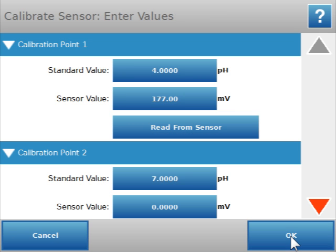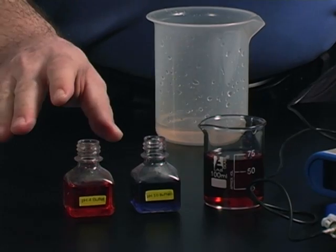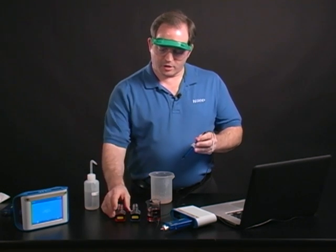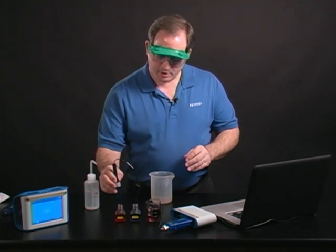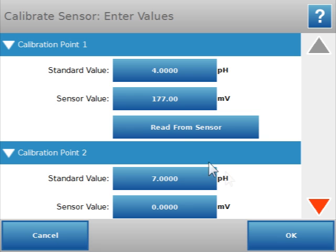You'll see it automatically comes up with the two points shown. I'm using a 4 buffer and a 10 buffer. It's set up with 4 and 7 by default, but we can change that. I'll start with the 4 buffer. I'm going to take the probe, stick it into the 4 buffer, and read from sensor. That will take a value from the sensor and associate it with pH 4.